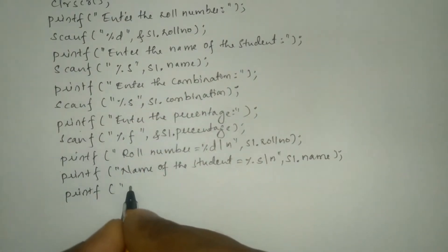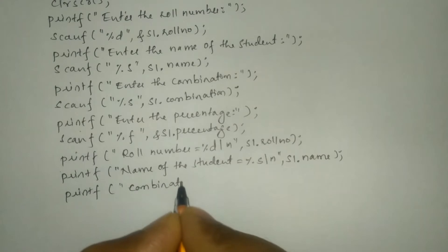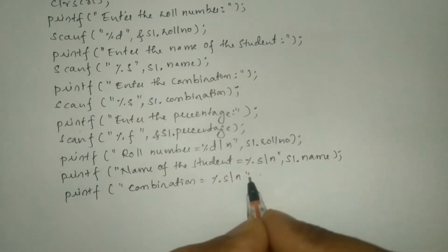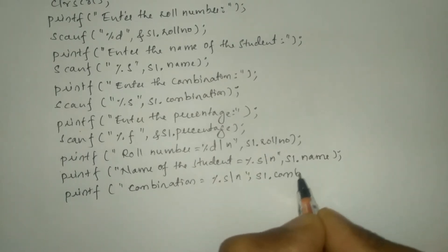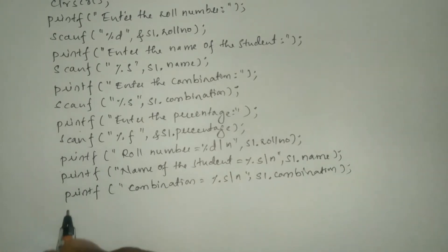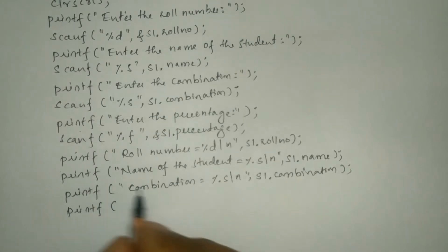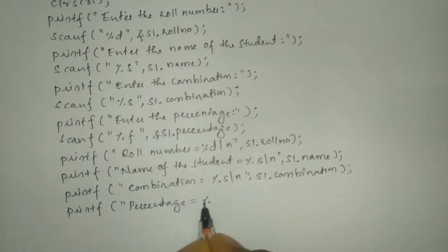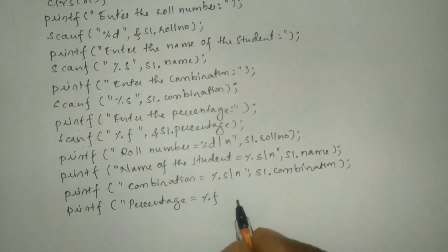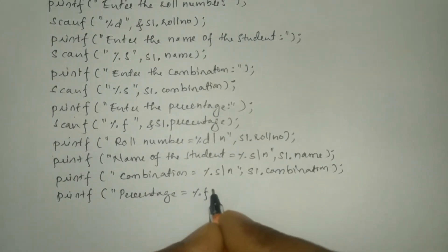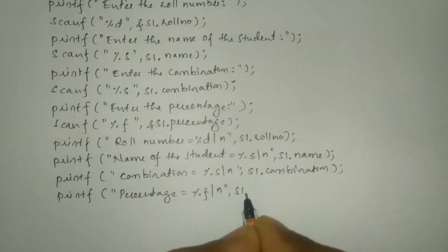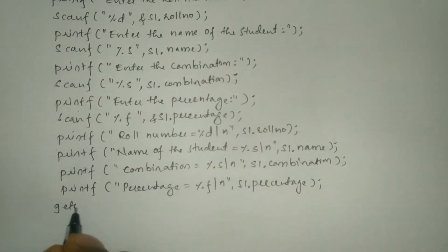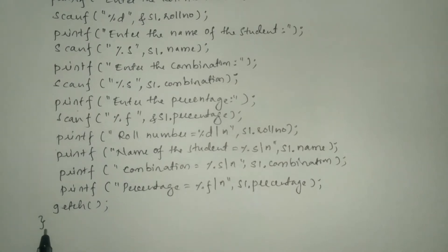After this we are going to write the combination: printf, in double quotation marks combination is equal to %s, backslash n, end double quotation mark, comma s1 dot combination. Then the last member is percentage: in double quotation marks percentage is equal to %f, backslash n, end double quotation mark, s1 dot percentage and put semicolon. Here I'll write getch function and curly closing brace for main function.